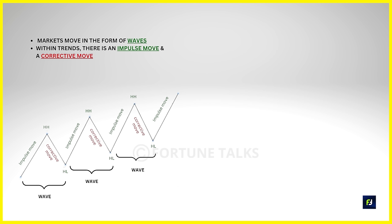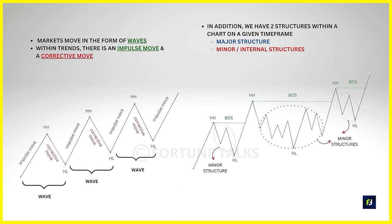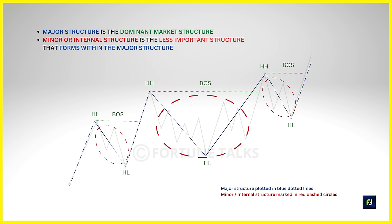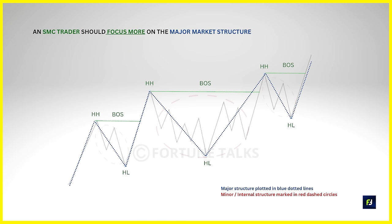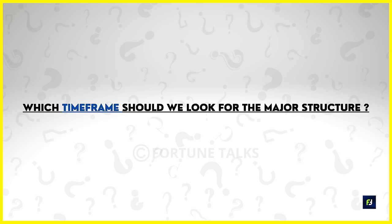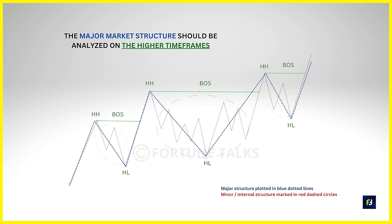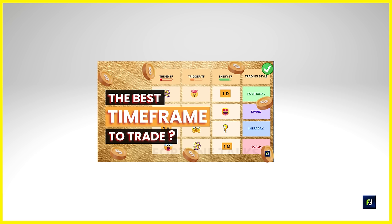What needs to be added is that a market structure comprises two structures: there is a major structure and a minor or internal structure. The major structure is the dominant structure that determines the dominant player in the market. The minor or internal structure is less important and gets formed within the major structure. If you are planning to be an SMC trader, train your eyes to spot major market structures over minor ones, because it is the major structure that the majority of our trades will be concentrated on.